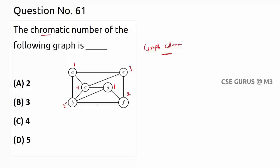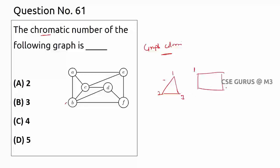The chromatic number is the minimum number of colors needed to color a graph. For example, a triangle requires three colors: color one, two, three. A square can be colored with just two colors — alternating one and two on non-adjacent vertices — so its chromatic number is two, and the triangle's is three.